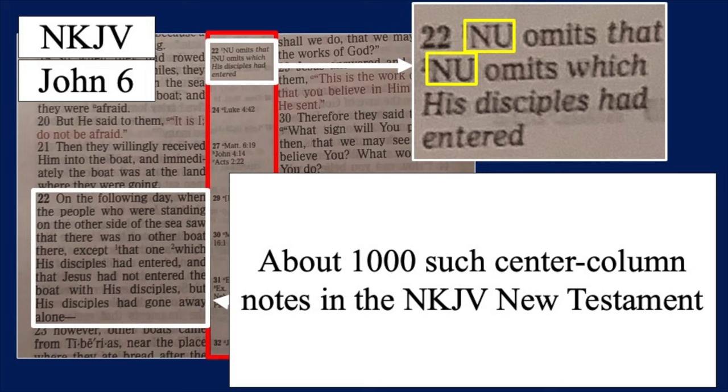One more example: John 6:22 — 'On the following day, when the people were standing on the other side of the sea, they saw that there was no other boat there except that one in which Jesus' disciples had entered.' The footnote notes that the NU omits certain phrases. The result can be seen in the ESV: 'On the next day, the crowd that remained on the other side of the sea saw that there had been only one boat there.' These are just a couple of examples of the kinds of variants we're talking about. In the New King James Version, there are about a thousand such center column notes.